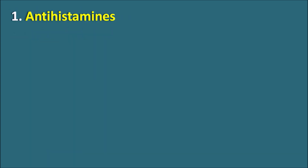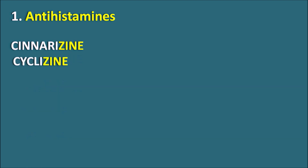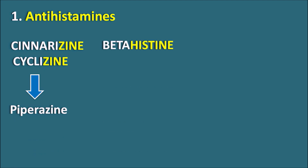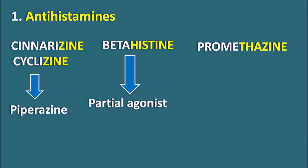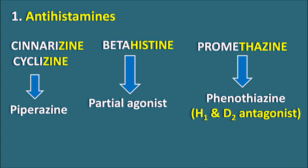The first class is the antihistamines. Many antihistamines are available for allergic conditions and rhinitis, but a few are used specifically to treat nausea and vomiting. Two drugs in particular are cinnarizine and cyclizine, both having the suffix '-zine,' indicating they are piperazine derivatives. We also have betahistine, which is a partial agonist — it has antagonist activity on H1 receptors and agonist activity on H3 receptors. Another drug is promethazine, a phenothiazine derivative, which acts as both an H1 and D2 antagonist, meaning it is both an antihistamine and a dopamine antagonist, and also shows some antagonistic activity on muscarinic receptors.